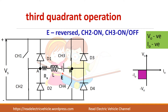For third quadrant operation, V0 and I0 should both be negative. An important point: the polarity of E must be reversed, because in third quadrant speed (omega) is negative, meaning back EMF is negative. CH3 is operated — turned on and off. For reverse motoring, two diagonally opposite switches are needed: CH2 and CH3 are turned on, just as CH1 and CH4 were for first quadrant operation.